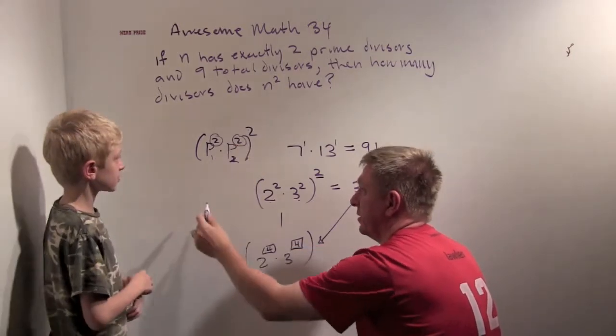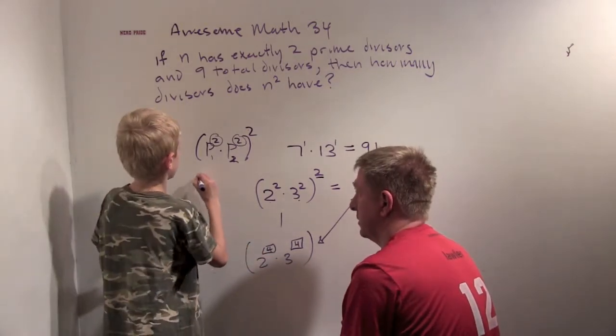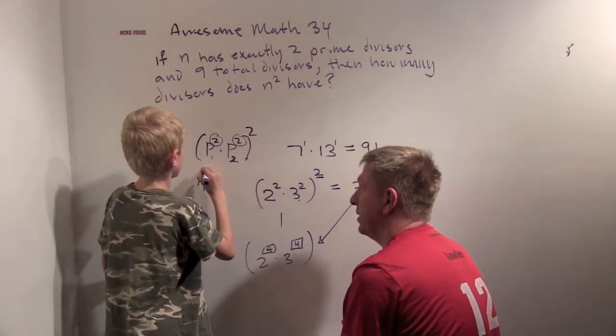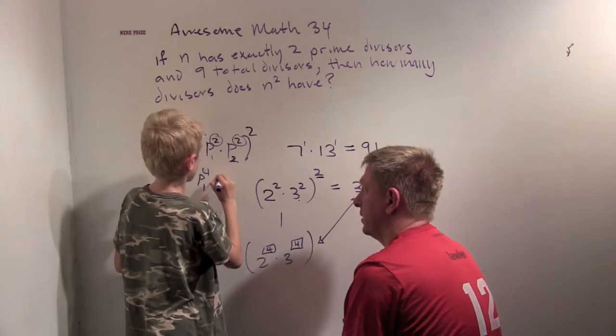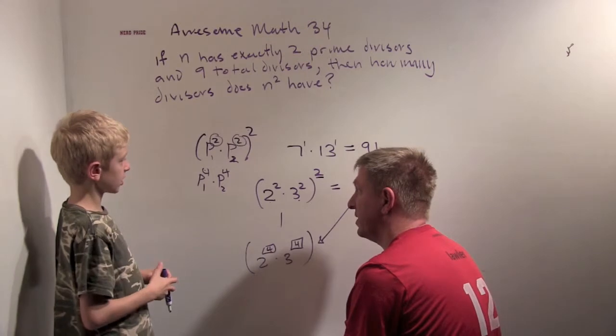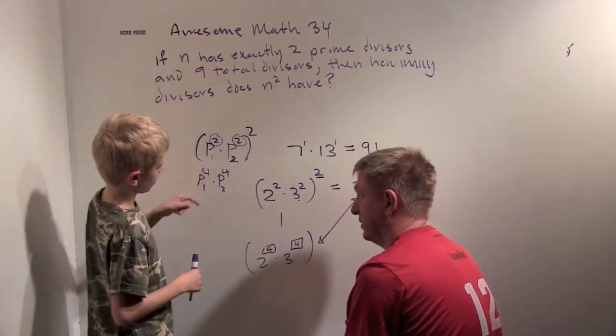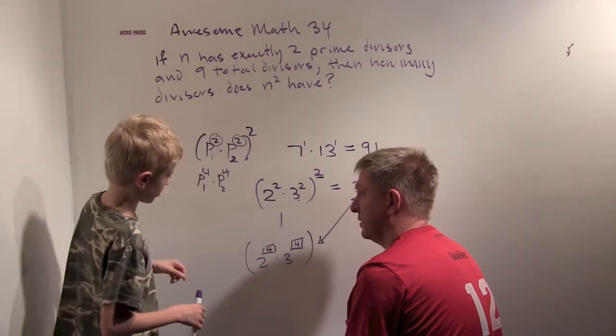So, what is this going to be when you multiply it out? It's going to be Prime 1 to the 4th times Prime 2 to the 4th. Awesome. Very good. And how many divisors does that have? Well, you have 5 choices here, 5 choices here, which is 25.